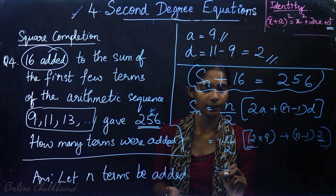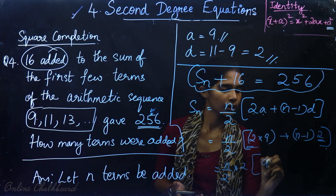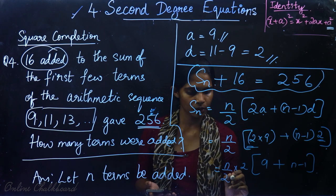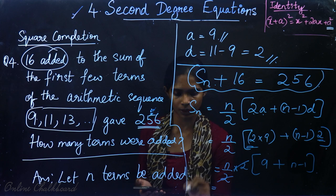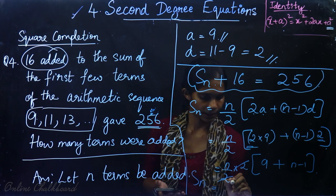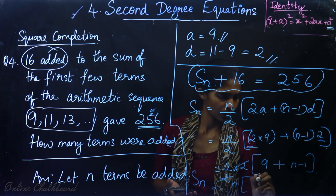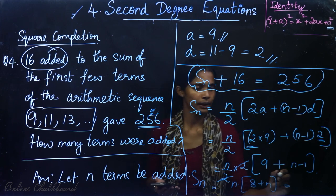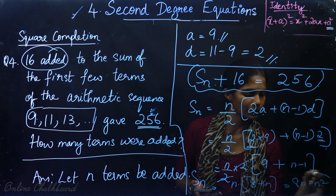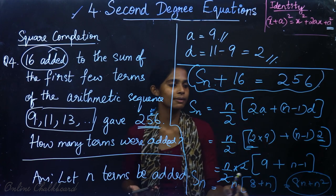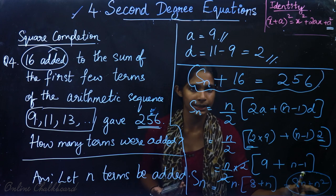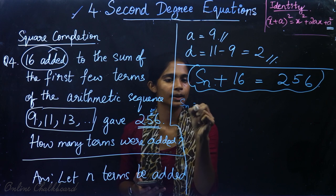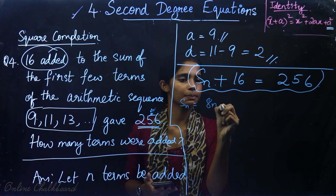Taking 2 as common factor out of 2 into 9 and cancelling with the 2 in the denominator, we get Sₙ equal to n into (9 plus n minus 1), which simplifies to n into (8 plus n), giving Sₙ equal to 8n plus n².